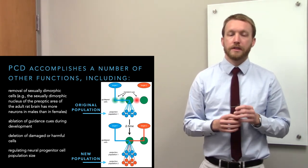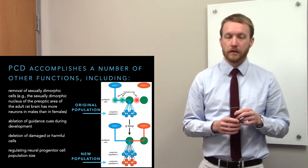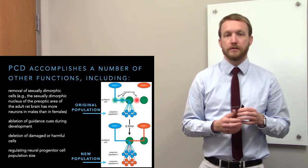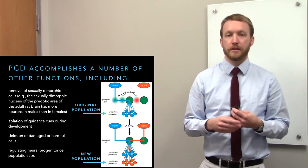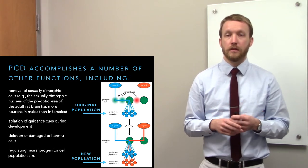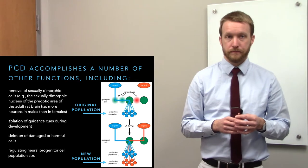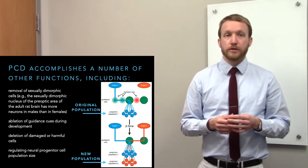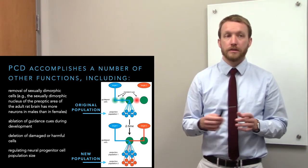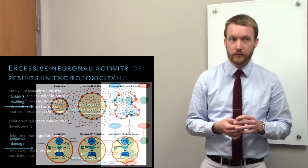Programmed cell death is also useful any time we have damaged or mutated cells. If a cell stalls in the cell cycle because of accumulated mutations, the best approach is to kill it off so it doesn't continue to mutate and potentially form cancers. It also regulates the size of progenitor cell pools. So programmed cell death does a number of things for us.